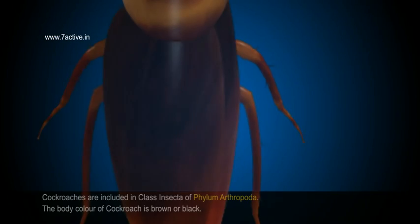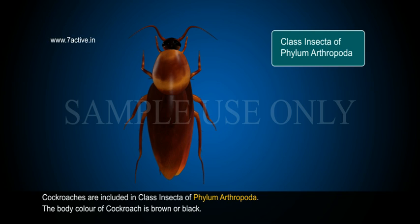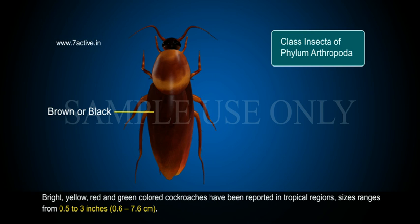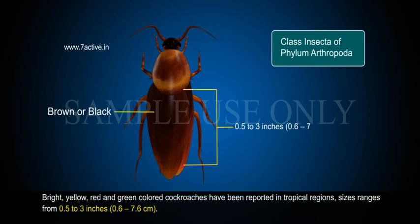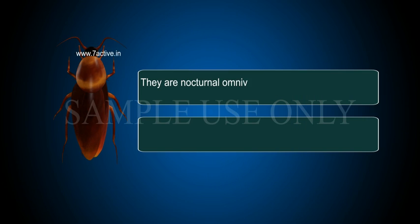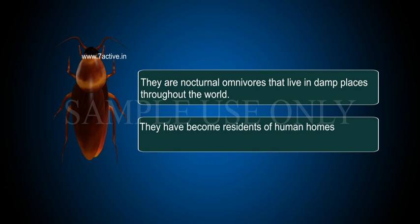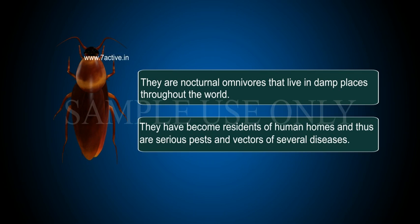Cockroach. Cockroaches are included in Class Insecta of Phylum Arthropoda. The body colour of cockroach is brown or black. Bright, yellow, red and green coloured cockroaches have been reported in tropical regions. Sizes range from 0.5 to 3 inches, equivalent to 0.6 to 7.6 centimetres. It consists of long antennae, legs and a flat extension of the upper body wall that conceals the head. They are nocturnal omnivores that live in damp places throughout the world. They have become residents of human homes and thus are serious pests and vectors of several diseases.